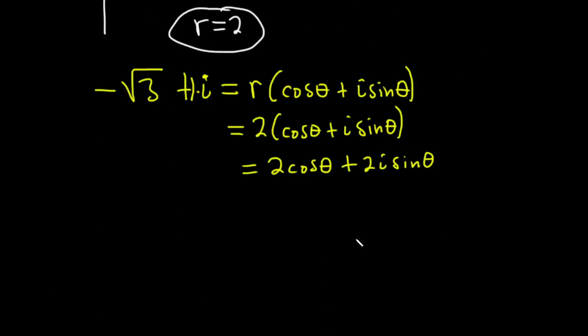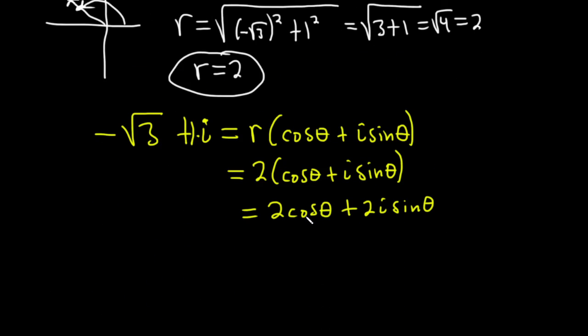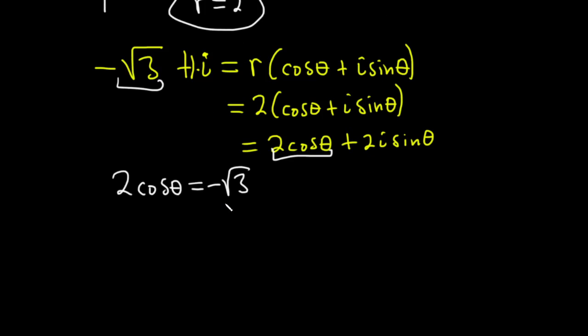So down over here, the real part is going to be this 2 cosine theta. So what you do is you take 2 cosine theta, the real parts must be equal. So this is equal to negative root 3. Really nice. And then the imaginary part, 2 sine theta, is equal to 1. So 2 sine theta equals 1. So we have the cosine of theta equals negative root 3 over 2. Sine of theta equals 1 half.